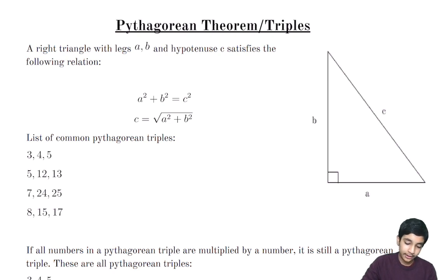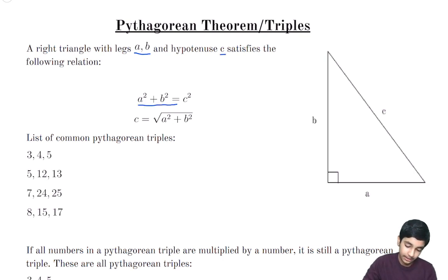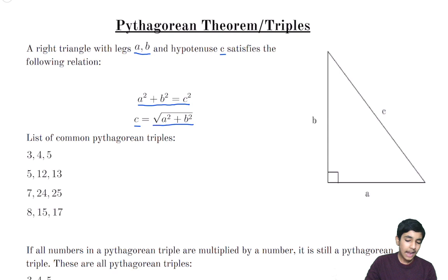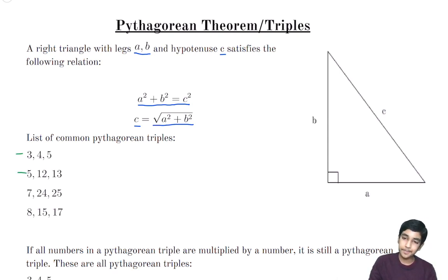The Pythagorean theorem says that if you have a right triangle with legs a and b and hypotenuse c, we have that a squared plus b squared is c squared, or that c, the hypotenuse, is the square root of a squared plus b squared. Some common Pythagorean triples are 3, 4, 5; 5, 12, 13; 7, 24, 25; and 8, 15, 17. Those are some good ones to know and memorize.